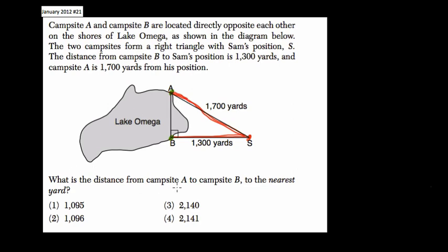What is the distance from campsite A to B? Well, this is a right triangle. They give us this leg of 1,300 and the hypotenuse. They're asking for the other leg.